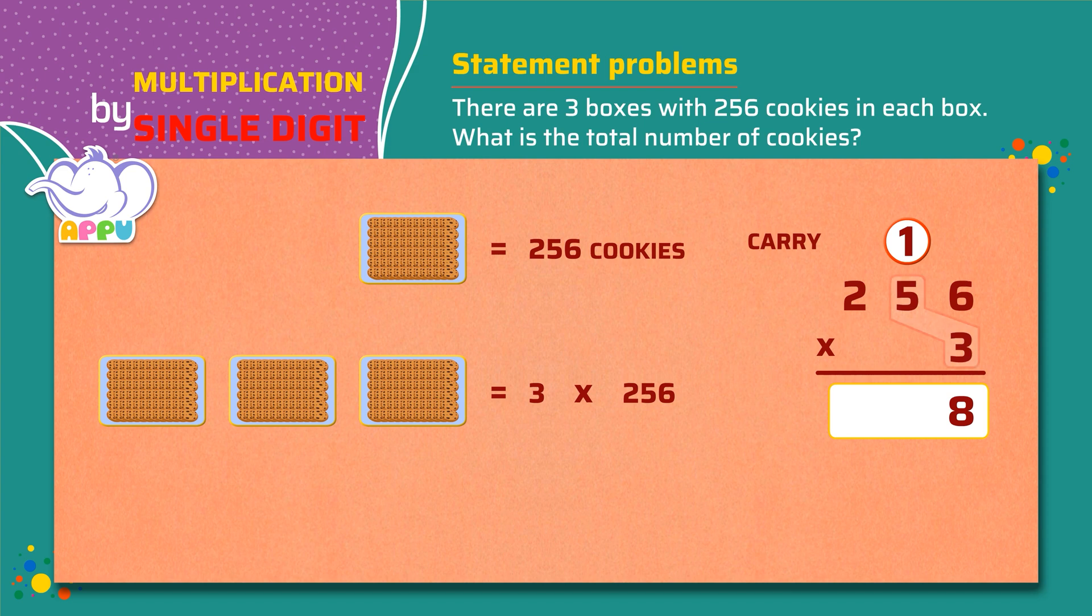Multiply the number in the tens place by 3, which is 5 times 3 equals 15. Then add the carry to get 15 plus 1 equals 16. We keep 6 and carry 1.